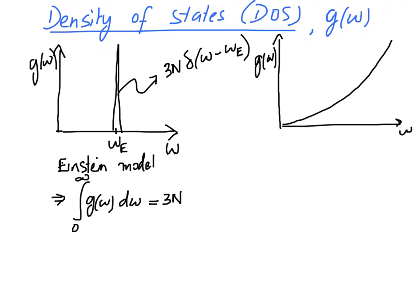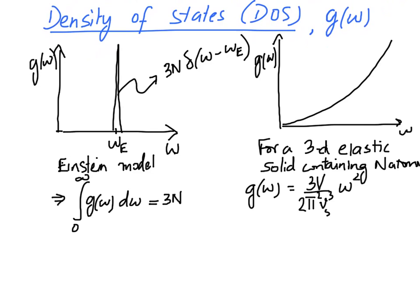I will now state the actual functional form of G(ω) without proof — we will prove it in the next session. For a 3D elastic solid containing N atoms, G(ω) is proportional to ω² with a prefactor involving V (the volume of the solid) and vs (the velocity of the sound wave in the solid).